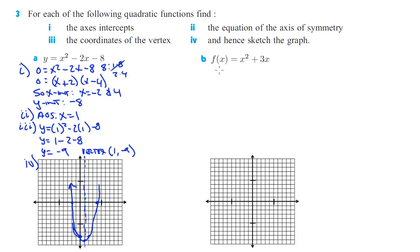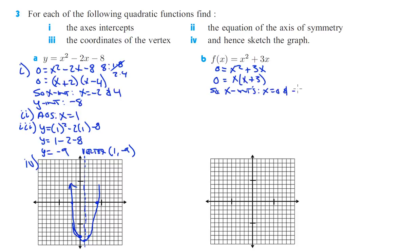For part B, finding x-intercepts and y-intercepts. We set 0 equals x squared plus 3x. You can factor an x out of both terms: x times (x plus 3). So x-intercepts are at x equals 0 and negative 3. The y-intercept is going to be 0, since there's no constant term.